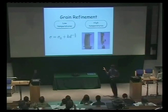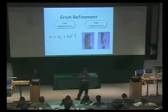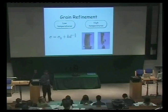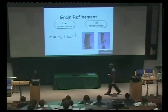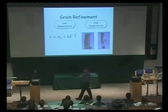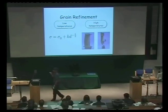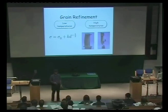The Hall-Petch equation is the holy grail of grain structures, because the smaller the grain size, the higher the strength. I can increase strength by many methods — solid solution hardening, or introducing lots of cold deformation to get high dislocation density. But the vast majority of techniques for increasing strength lead to a decrease in toughness. Grain size is one of the few mechanisms which leads to an increase in strength and at the same time increases toughness.